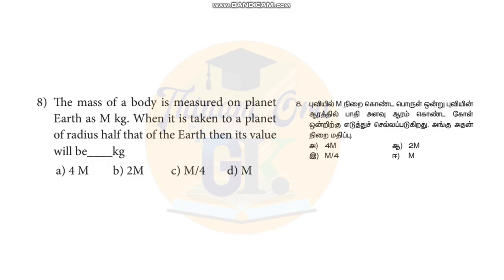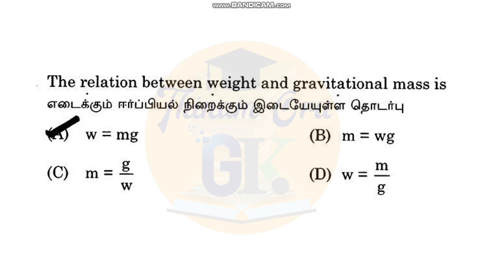So the weight is 3. Weight is 3, so this is the formula. The relation between weight and gravitational mass: weight is equal to mass into acceleration due to gravity.